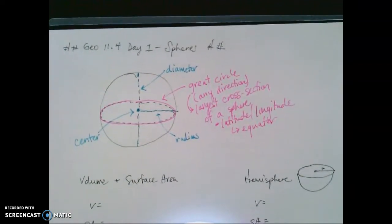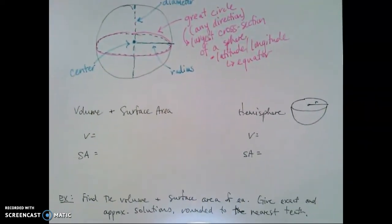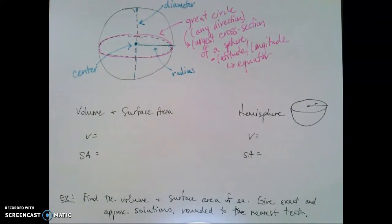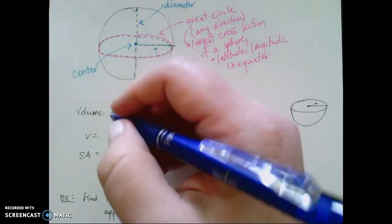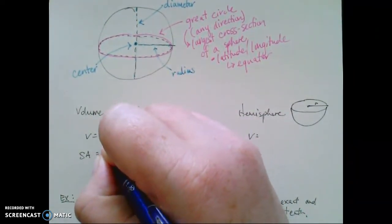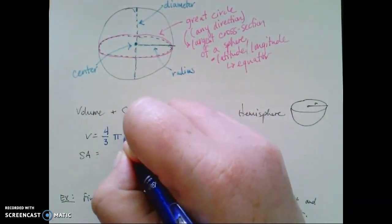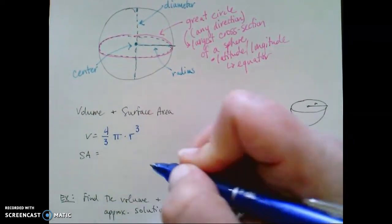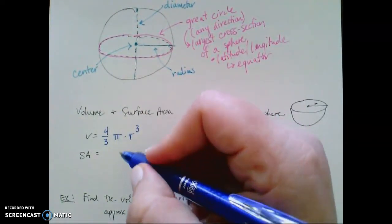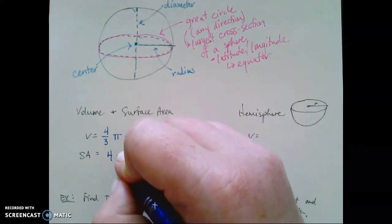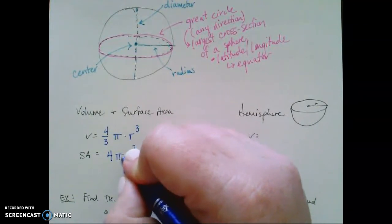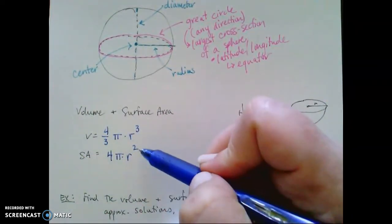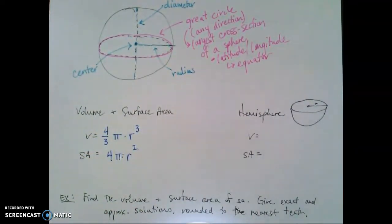Now, yesterday or in our previous video, we looked at the volume and surface area of a sphere. So as a quick reminder, the formula for volume of a sphere is 4 thirds pi times the radius cubed. And the surface area is 4 pi radius squared. So remember, area is always squared. Volume is always cubed.